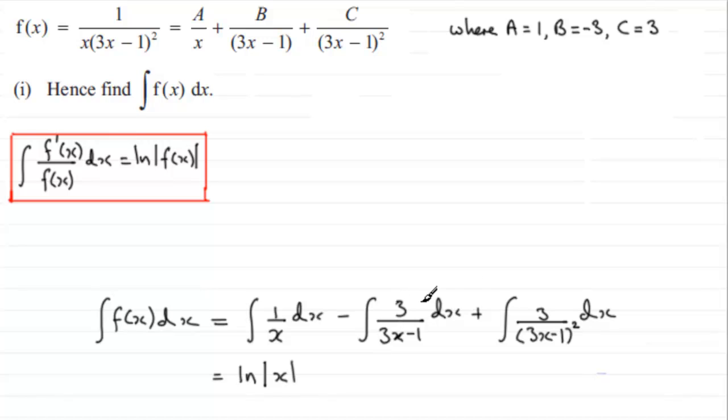And similarly with this one, if you differentiate 3x minus 1 with respect to x you get 3, the value on the top. So for this one here, this is going to be minus the natural log of the mod of the denominator here, and that is going to be then 3x minus 1.